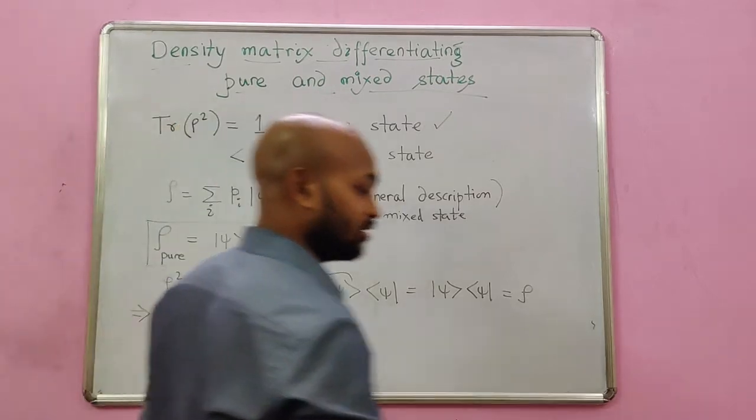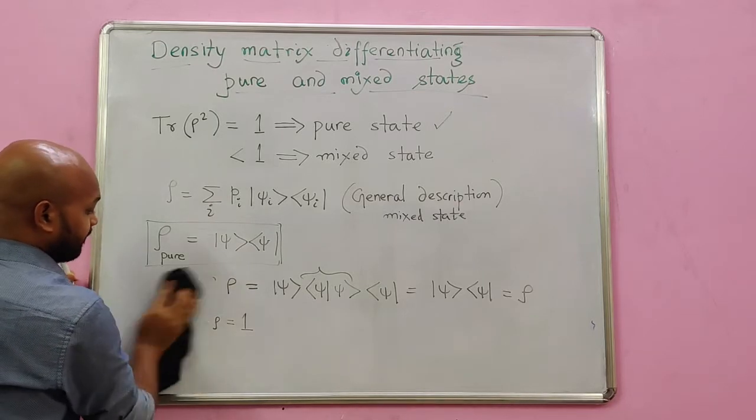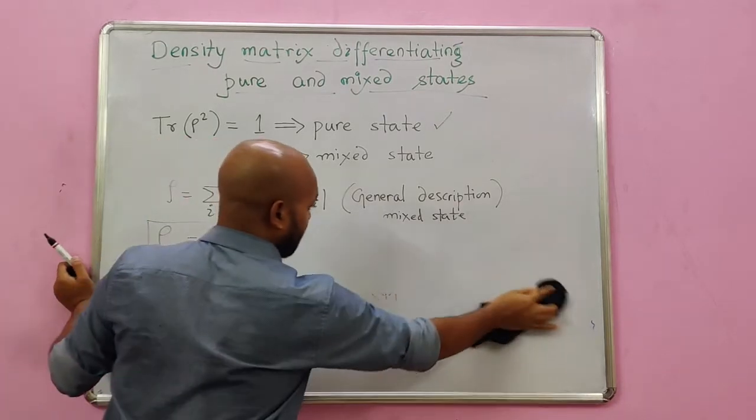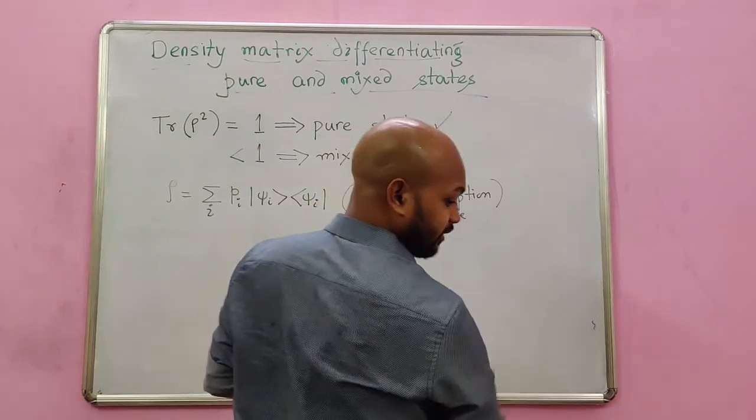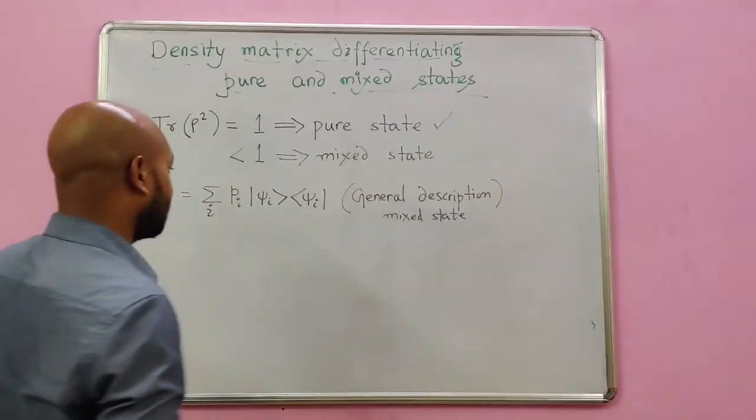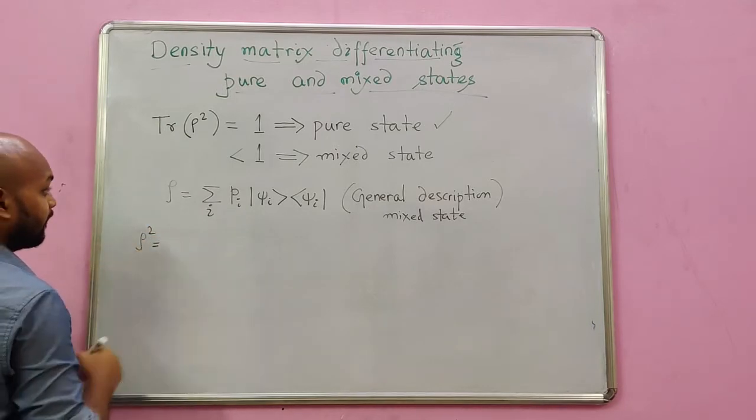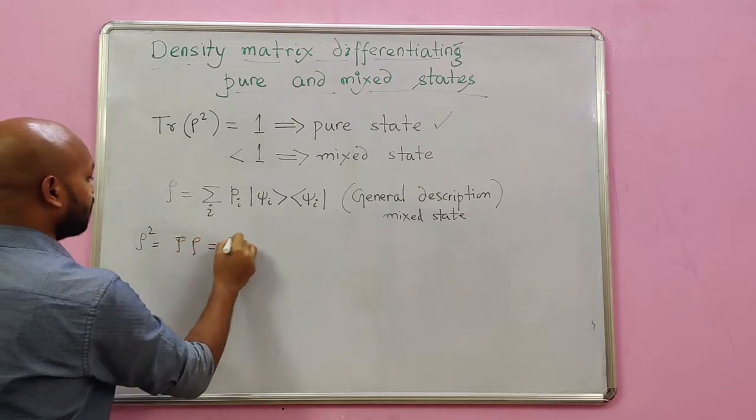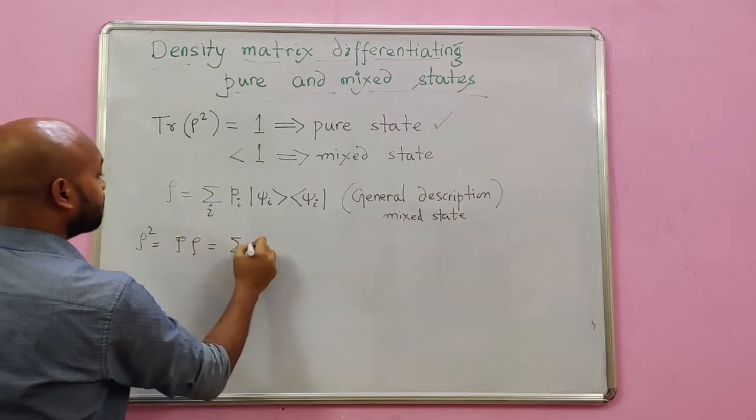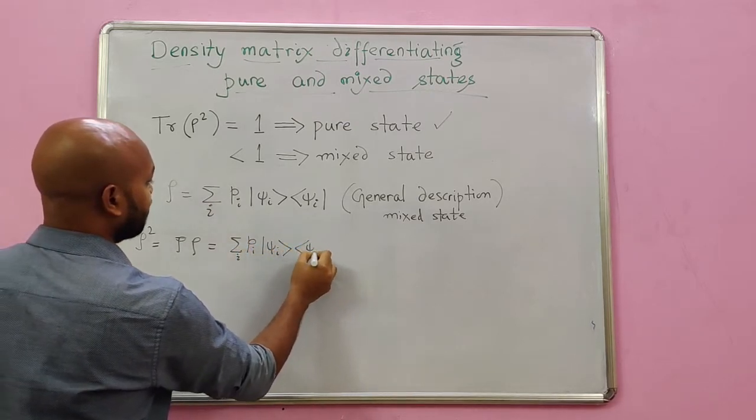Let's see that in the case of mixed state then. In the case of mixed states, when I calculate rho squared, then it's rho, rho, right? So summation i, pi, psi i, psi i, and then another.